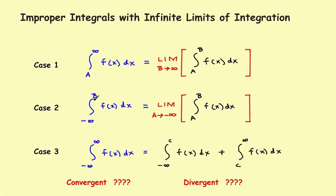Now what we're going to do is go from some fixed number B off to the left to a negative infinity. The process will be similar, but the only difference is rather than taking the limit as B goes off to the right, we'll take the limit as A goes off to the left toward a negative infinity. So we'll use this second rule right here.